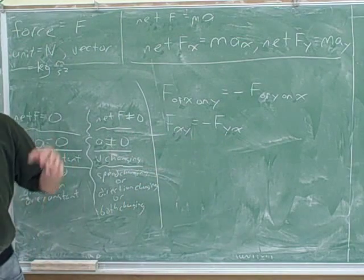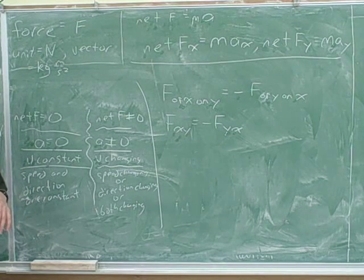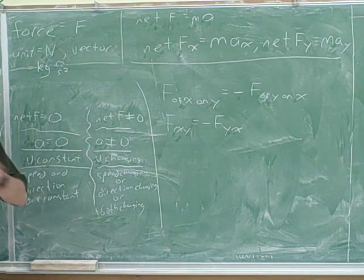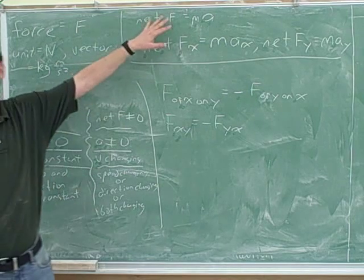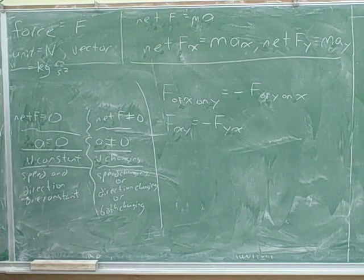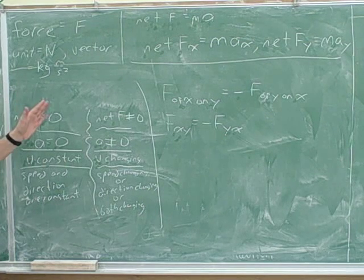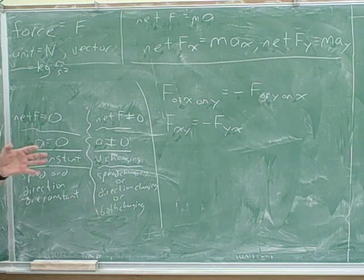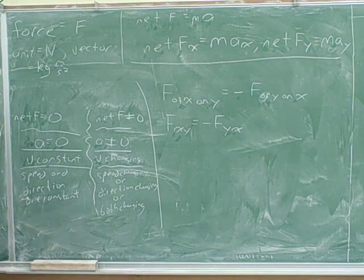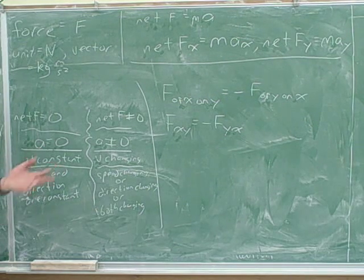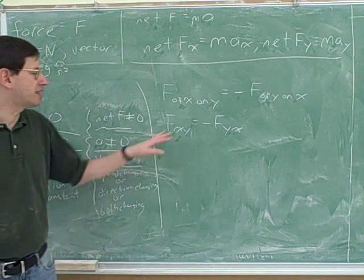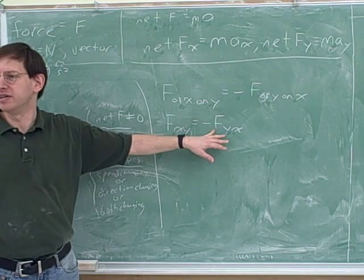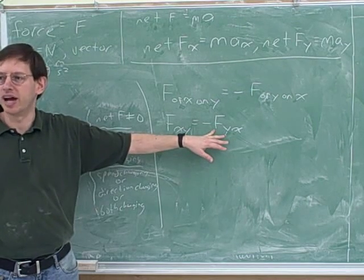So you would never actually add these to each other. We only add forces on the same object. We identify all the forces on one object and add them up to find the net force on that object. There's no point adding the force on me to the force on this blackboard — we're two completely different objects. When you're making a free body diagram, you only show the forces on one object. If there's another object, you need a whole new free body diagram. You only add forces when they're on the same object.